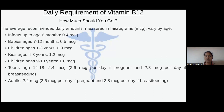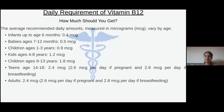The average recommended daily amounts measured in micrograms vary by age. For infants up to age six months it is 0.4 mcg; babies age seven to twelve months, 0.5 mcg; children aged one to three years, 0.9 mcg; kids age four to eight years, 1.2 mcg; children aged nine to thirteen years, 1.8 mcg; teenagers fourteen to eighteen years, 2.4 mcg per day. For pregnant women it is 2.6 mcg, breastfeeding women 2.8 mcg per day, and adults in general 2.4 mcg per day.